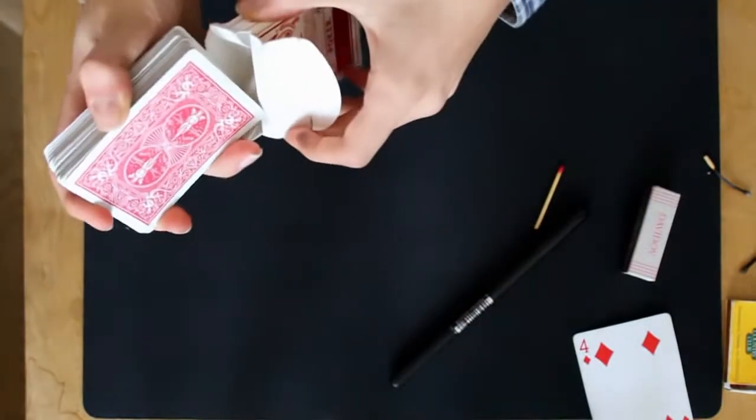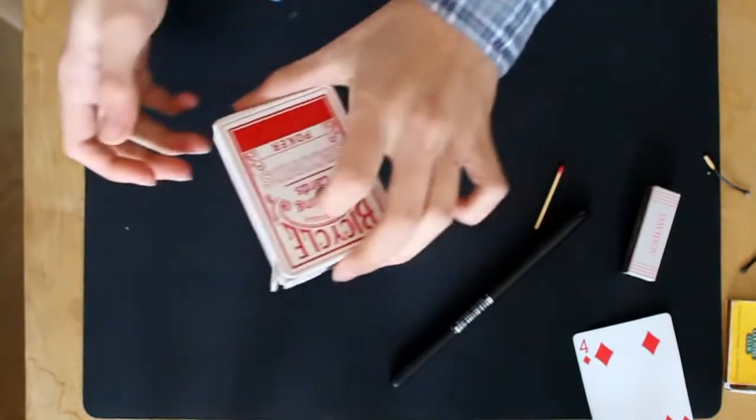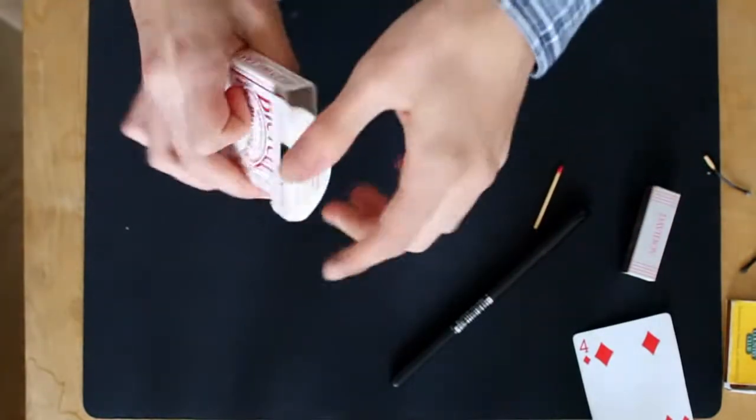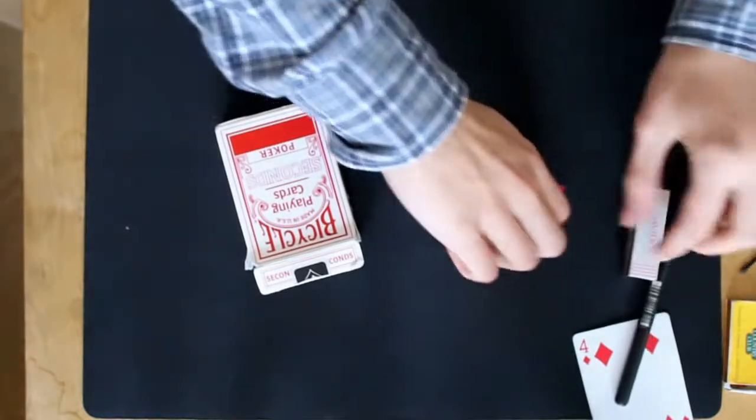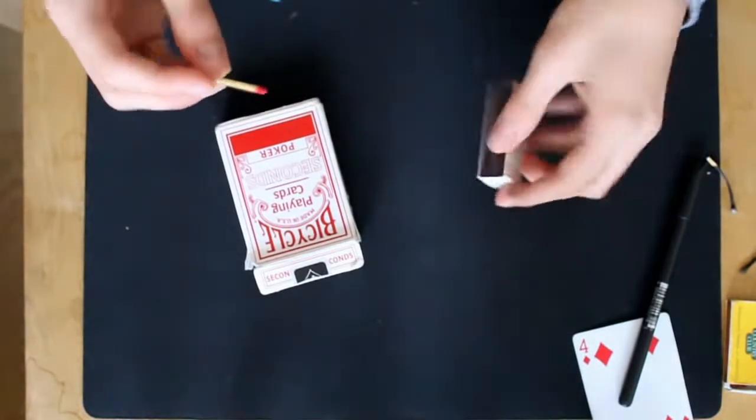And then you place the entire deck into the box and close the box like so. And make sure that the faces are down when you place the deck on the table. Now you bring out your match or your candle or something like that.